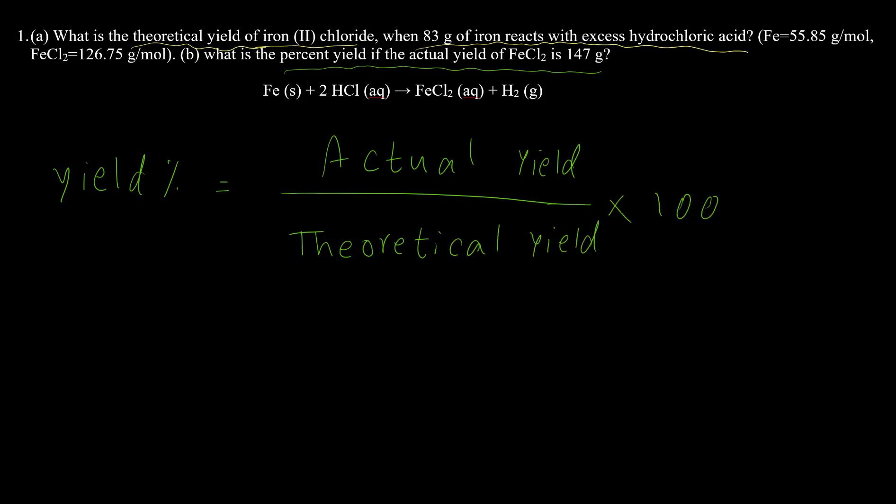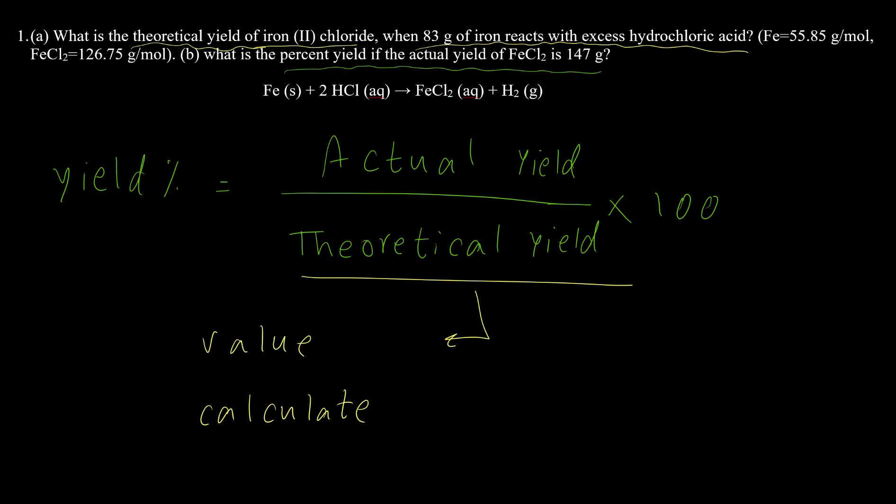Let's see what these terms mean. The theoretical yield is the value we calculate by stoichiometry — whenever we calculate the amount of product based on the reactant, we are calculating the theoretical yield. The actual yield is normally given in the question; it's the actual amount of product we have at the end of the reaction.